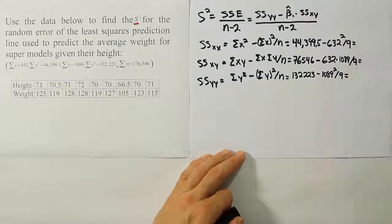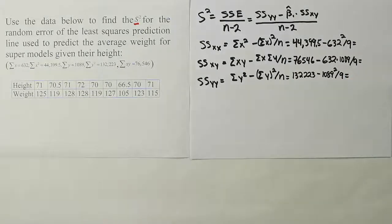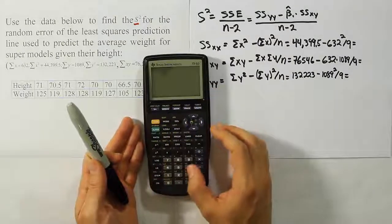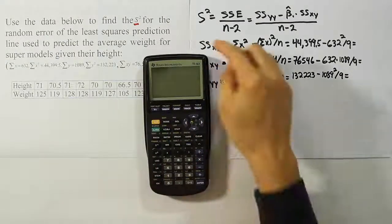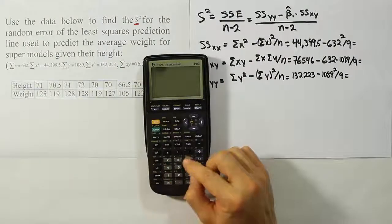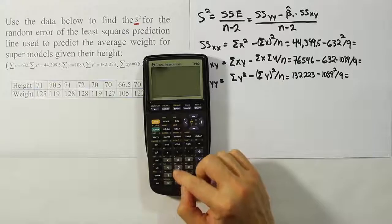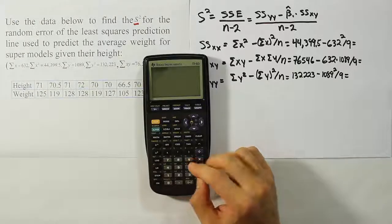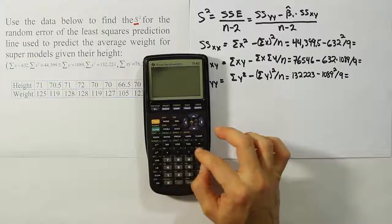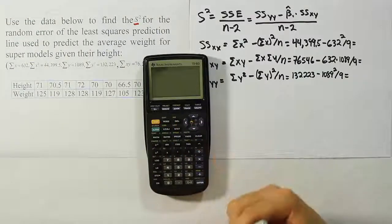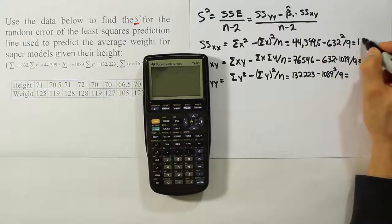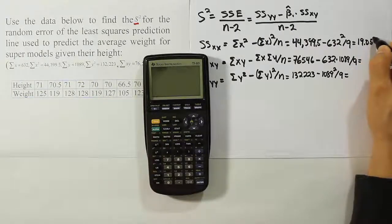Now let's whip out the calculator and do those calculations one by one. Starting with the sum of squares for the X value: 44,399.5 minus 632 squared divided by 9. When we do that we get the answer 19.05 repeating.